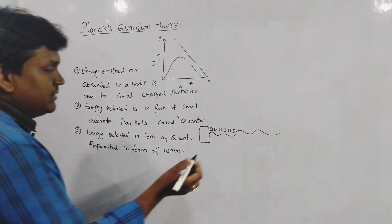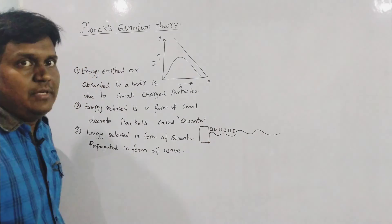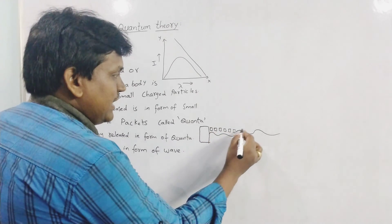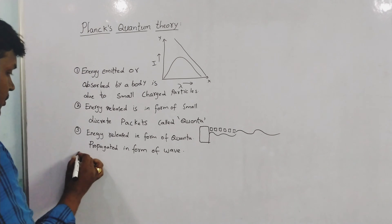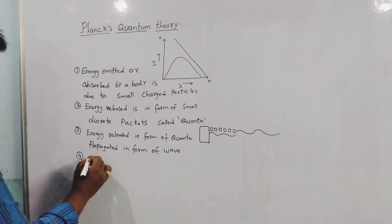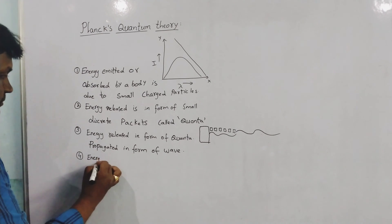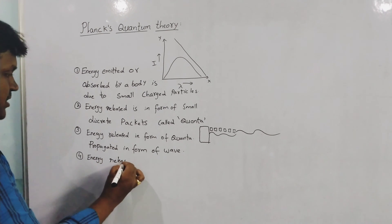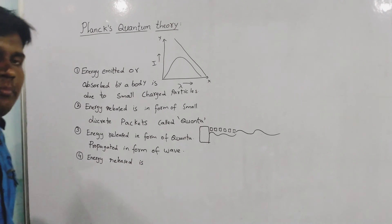That is why we say light has a dual nature — both a particle nature and a wave nature.